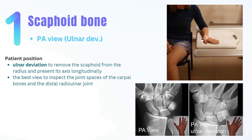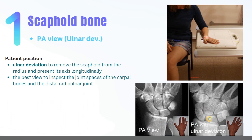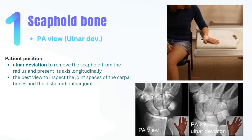The first projection is the PA with the hand flexed toward the ulna bone. This ulnar deviation removes the scaphoid from the radius and presents its longest axis. Looking at these two X-rays from the same patient — this is a PA view and this is a PA with ulnar deviation — you can see how clearly the fracture is visible here. In the PA view you can see it, but the ulnar deviation view is the best to illustrate the scaphoid fracture and also to inspect the joint space of the carpal bones and the distal radio-ulnar joint.